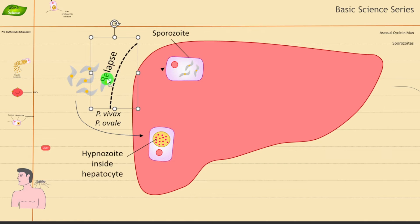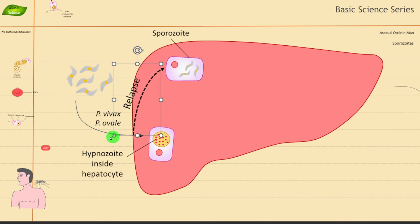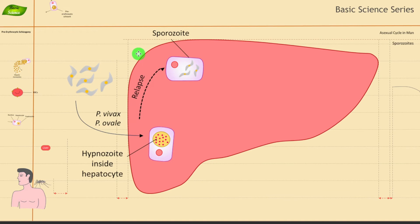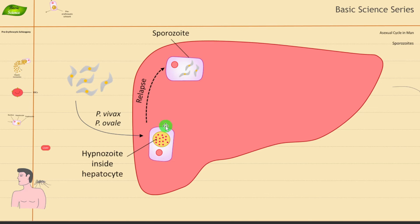After a few years, hypnozoites can undergo changes and reappear to cause malarial symptoms. These hypnozoites can get activated and become sporozoites again. That is one important part of the pre-erythrocytic stage.